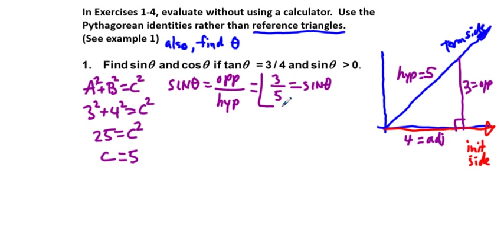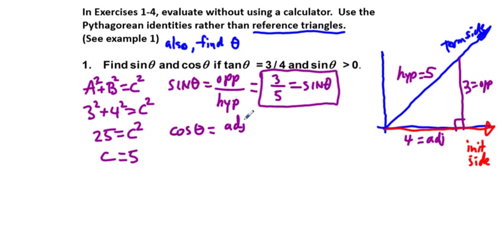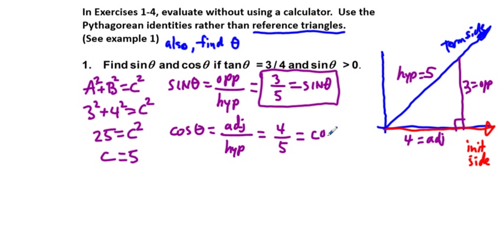And cosine theta equals adjacent over hypotenuse — cosine theta equals four-fifths. Our hypotenuse is five and our adjacent is four.